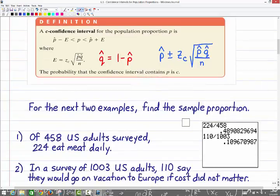Now this first example is just how do we find the sample proportion. This problem says 458 U.S. adults surveyed, 224 eat meat daily. So if we want to know then basically what's the sample proportion of people that eat meat daily, we would just take 224 divided by 458. And you know this could be decimal or percentage. I would think .489 is certainly good enough for that first one.